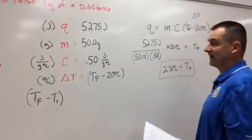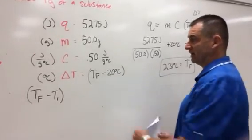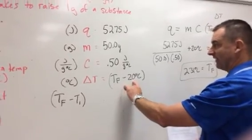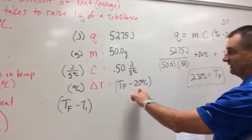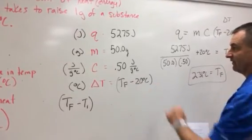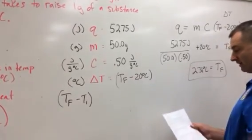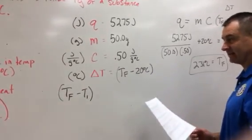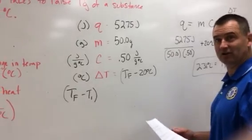That's how you do the delta T formula — just add that 20 at the end last to isolate Tf. Hopefully this makes sense, and good luck on your work.